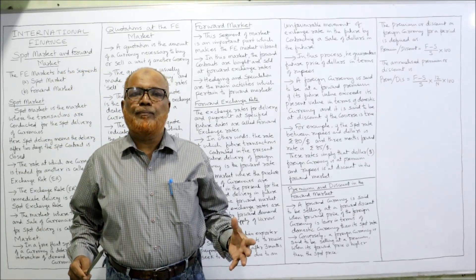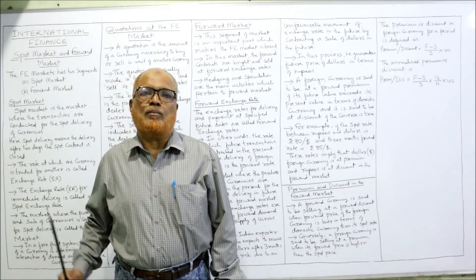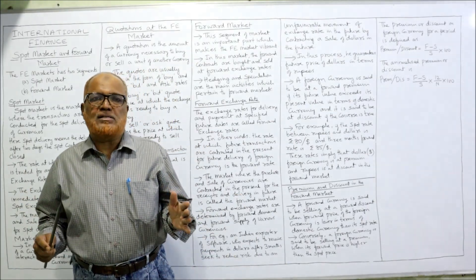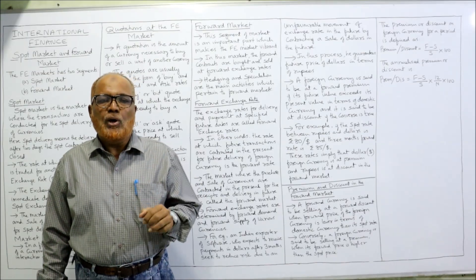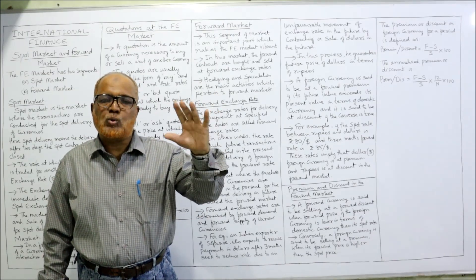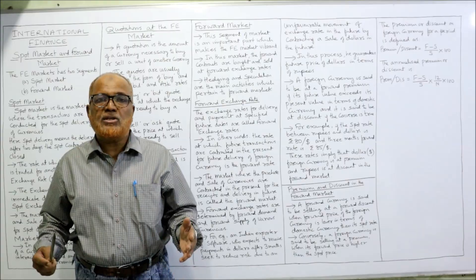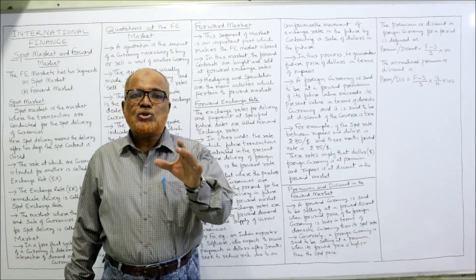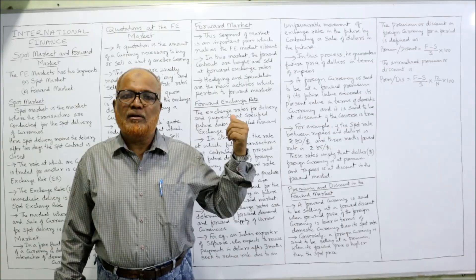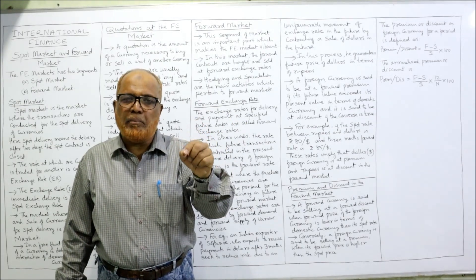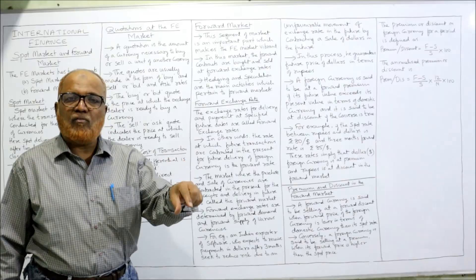Hedging and speculation are the main activities in the forward market. If we want foreign currency immediately, we use the spot market. But a multinational company may want to hedge — that is, protect the business against foreign exchange fluctuations. For hedgers, the forward market is very beneficial. Speculators who want to take advantage of market conditions also enter the forward market.